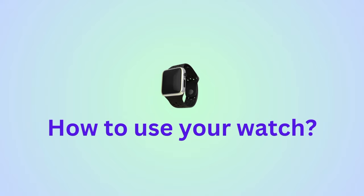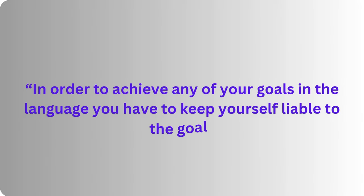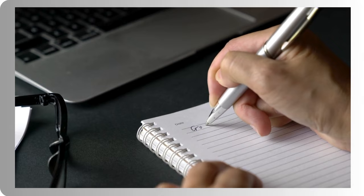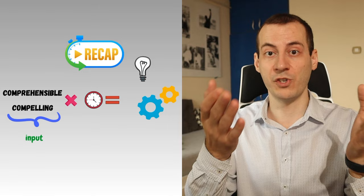You're probably asking yourself why you need a watch in order to achieve fluency in English. I would say this is a crucial part in the process of your learning. In order to achieve any of your goals in the language you have to keep yourself accountable. That's why you have to track your time spent with the language and keep yourself responsible towards achieving your ultimate goal, which is attaining fluency. Time spent with comprehensible and compelling input is proportional with the progress you will achieve.